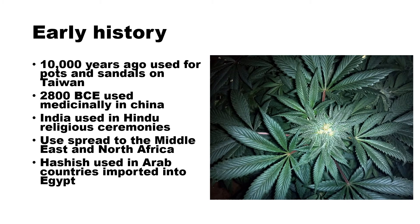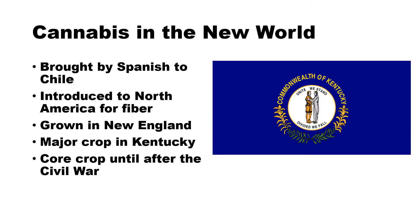The early history of marijuana. At least 10,000 years ago it was used for pots and sandals on the island of Taiwan. By 2800 years before the current era it was used medicinally in China. In India it was used in Hindu religious ceremonies, and the use spread from that area to the Middle East and then North Africa. Hashish, which is the resin removed from the plant, was used in Arab countries and imported into Egypt. Cannabis in the New World was originally brought by the Spanish to Chile.